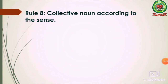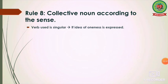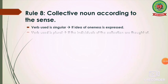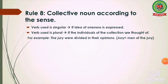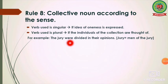The next rule is collective nouns — a very important rule. The verb used with a collective noun is according to the sense of the sentence. The verb is singular if the idea of oneness is expressed, and plural if the individuals of the collection are thought of separately. For example: 'The jury were divided in their opinions.' Here 'jury' refers to the men of the jury as individuals, so the plural verb 'were' is used.